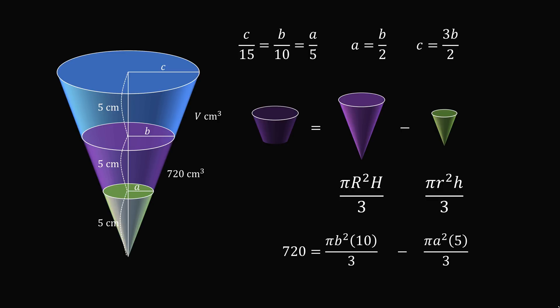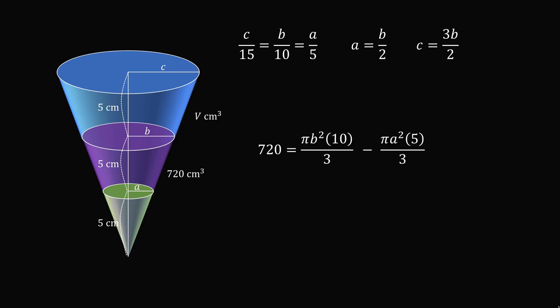So, we have 720, which is the volume of the truncated cone. That's equal to pi B squared times 10 all over 3 minus pi A squared times 5 all over 3. So let's simplify this equation. We'll multiply both sides by 3 over pi.